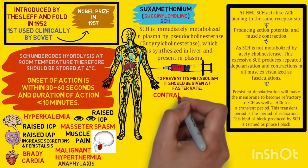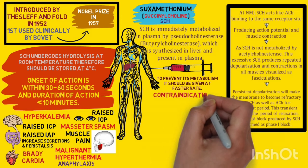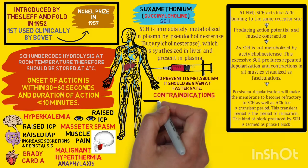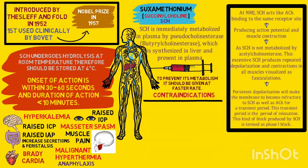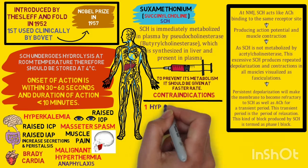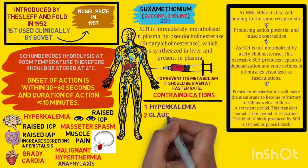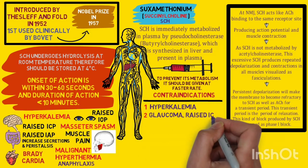Hyperkalemia, defined as a serum potassium level of 5.5 mEq/L or more, is an absolute contraindication for using succinylcholine. Other conditions such as raised intracranial tension, glaucoma, and eye injuries are relative contraindications.